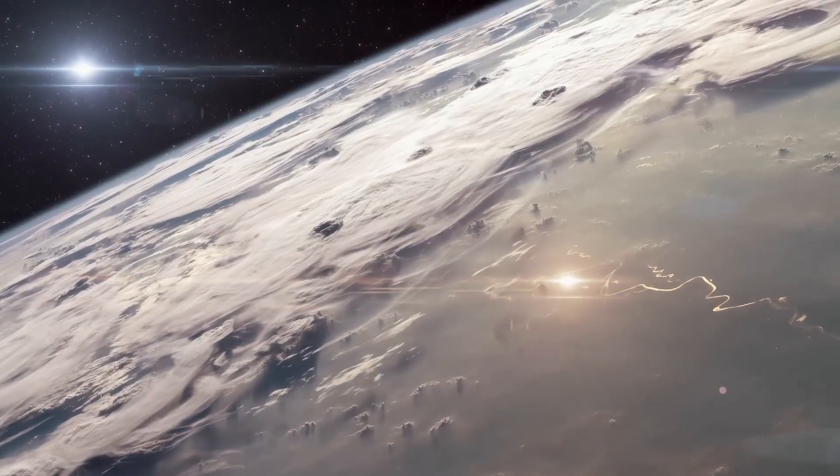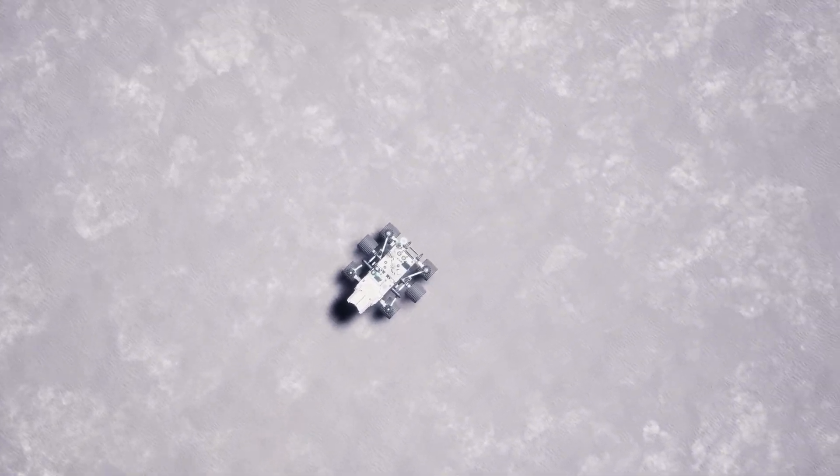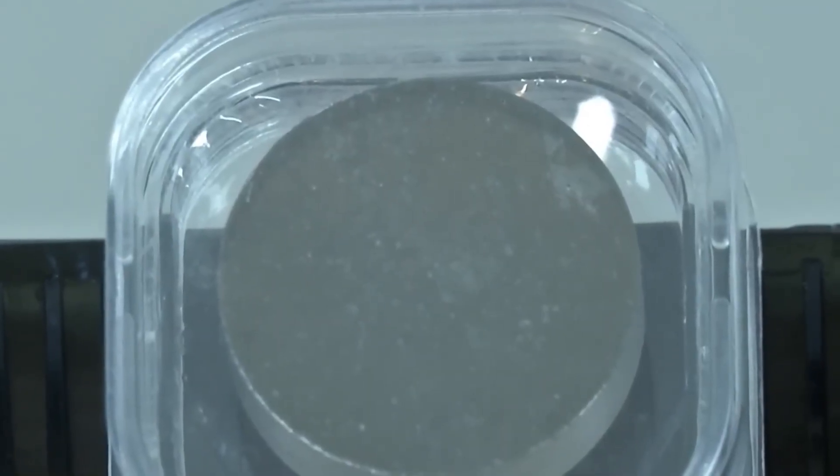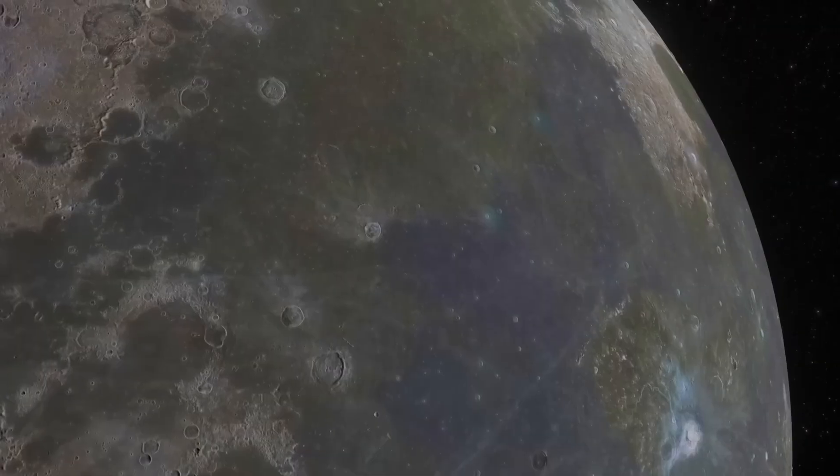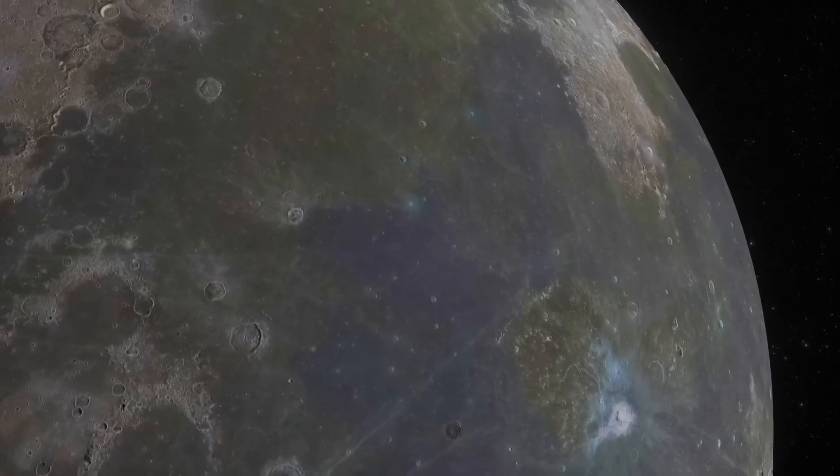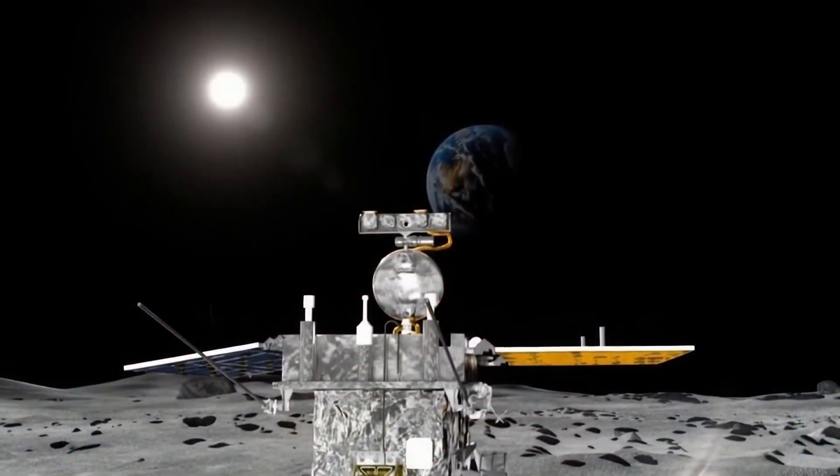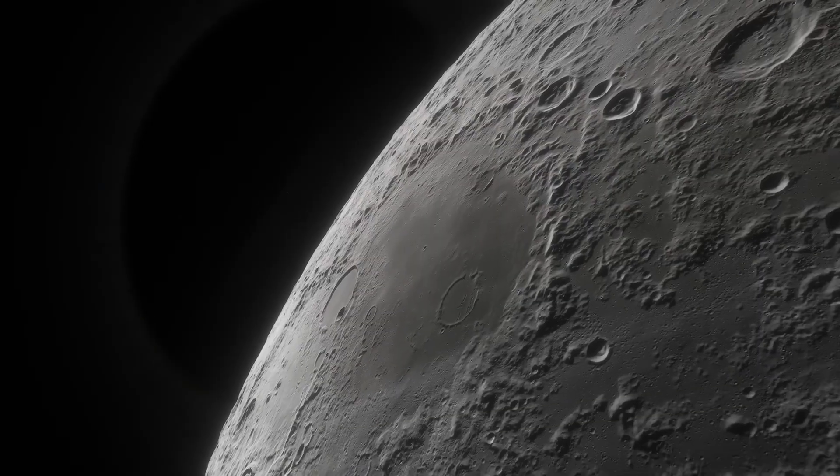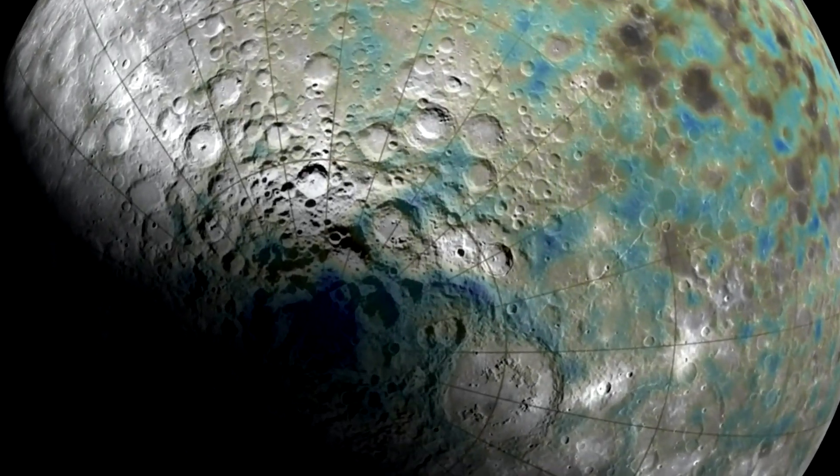But there's more. Because as important as energy is, something even more essential was hiding just below the surface. In the harsh vacuum of the moon, the last thing anyone expected to find was water. For decades, it was assumed that the moon was bone dry. After all, there's no atmosphere, no clouds, and temperatures swing between boiling and freezing. But China's recent missions proved otherwise. Using advanced spectrometers aboard the Chang'e 5 lander, scientists detected unmistakable signs of water molecules embedded in the lunar soil. Not puddles, not ice sheets, but hydrated minerals, tiny particles that had absorbed water through interactions with solar wind hydrogen. This might sound small, but it's massive.